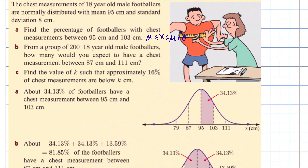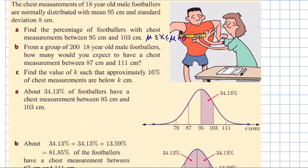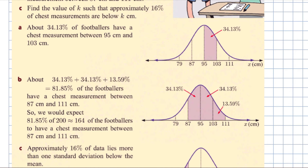The answer is 34.13%. You can see how they've drawn the sketch — you'll sometimes be asked to draw one, so don't get too hung up about how well you draw the curve, just draw it roughly. Notice they've put values on the bottom axis: 95 is the mean, then 103, 111 one and two standard deviations above, and 87, 79 one and two below. You can fill in different values depending on the situation, but it's still the same bell-shaped curve with the same percentage areas.